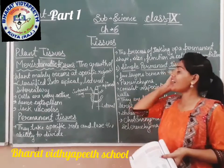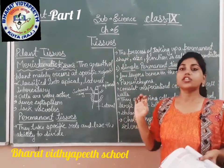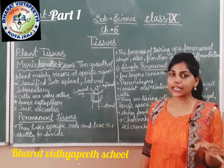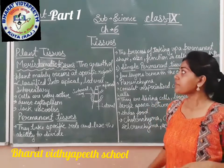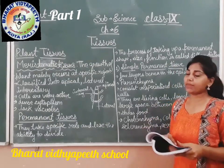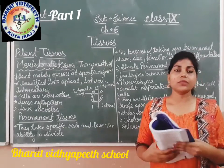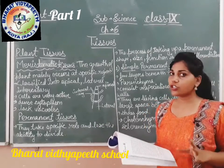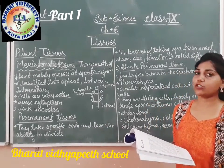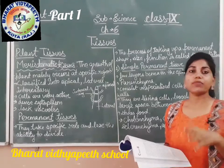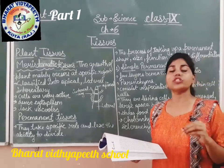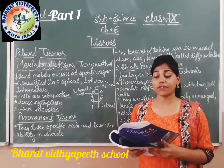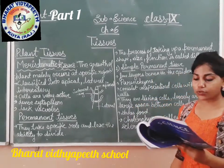Hello ninth class, now we are going to study chapter number six which is Tissue. In this chapter we are going to study about the different types of tissues found in plants and animals. Plant tissue and animal tissue are different from each other because plants are stationary objects and animals can move from one place to another, so there are different types of structures and tissues found in plants and animals.